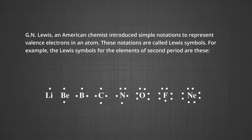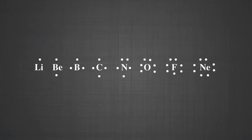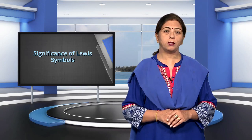In the formation of a molecule, only the outer shell electrons take part in chemical combination and they are known as valence electrons. The inner shell electrons are generally protected and do not participate in the combination process. G.N. Lewis, an American chemist, introduced simple notations to represent valence electrons in an atom. These notations are called Lewis symbols. The number of dots around the symbol represents the number of valence electrons, which helps calculate the common valence of the element — equal to the number of dots or 8 minus the number of dots.